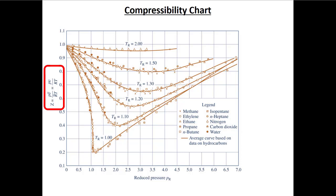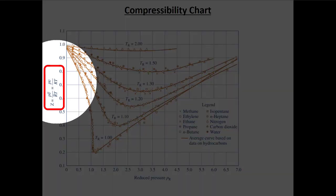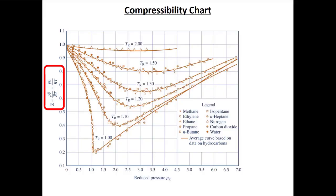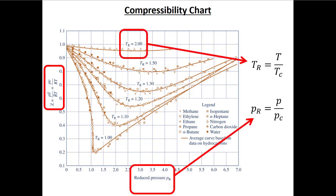Same thing with pressure — if you see pressure in an equation and it's not delta pressure, it's safer to use absolute pressure. Sometimes you absolutely have to use absolute pressure. You'd get a very different answer plugging in zero versus 273 kelvin, for example.